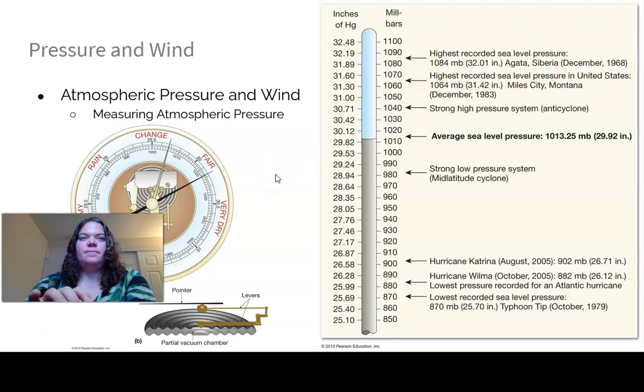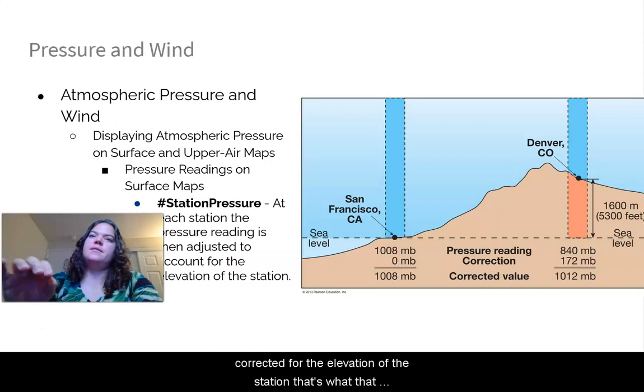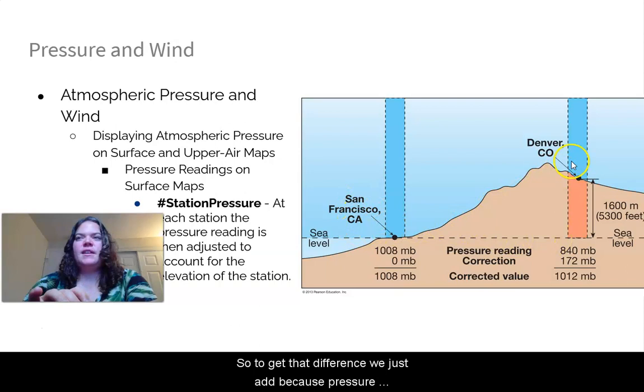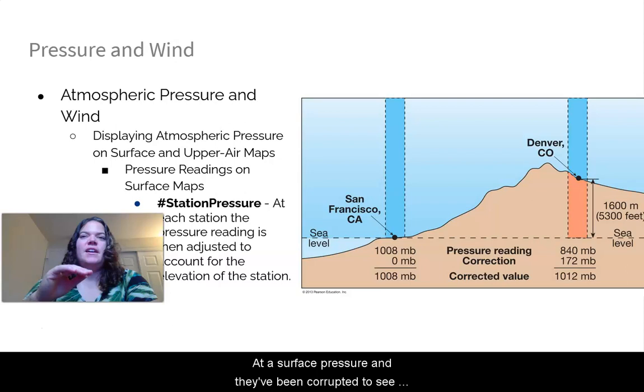So when I say station pressure, that's actually been corrected for the elevation of the station. Denver is the Mile High City, which means it is one mile of rock above sea level. So there's all of our mountain and rock here, 5,300 feet or one mile above sea level. And then San Francisco is at sea level. To get that difference, we just add a correction factor because pressure decreases with height, increases as you go down. So all of the maps that we see that are surface pressure have been corrected to sea level based on the station's elevation.